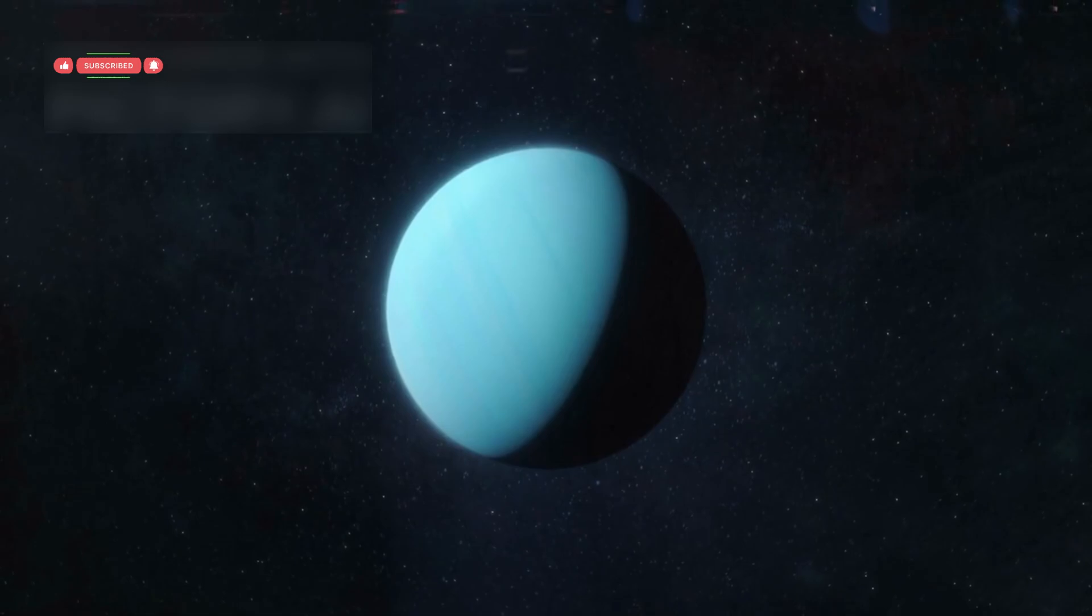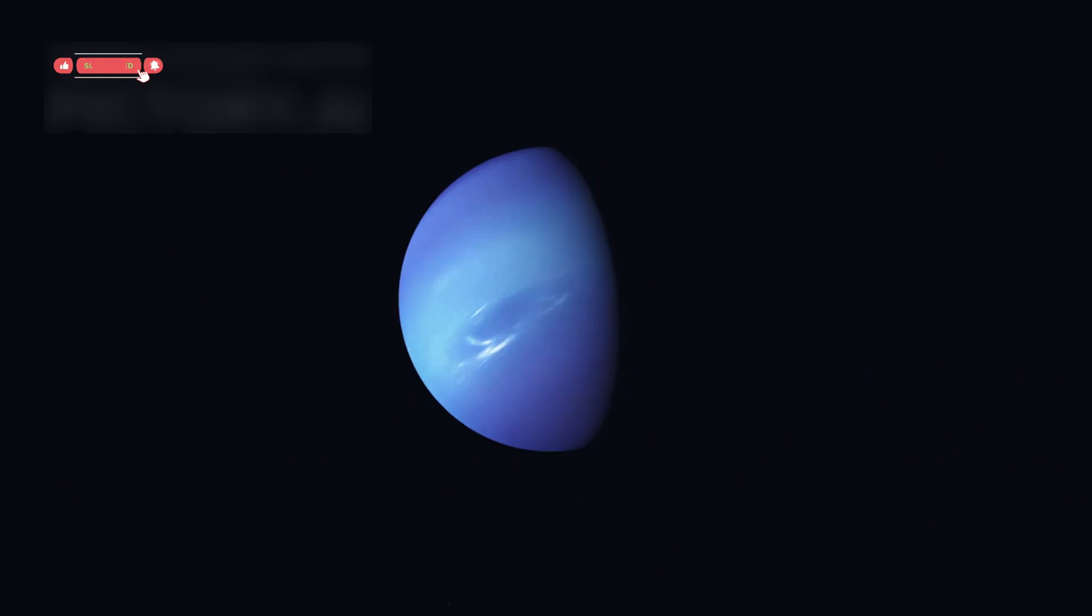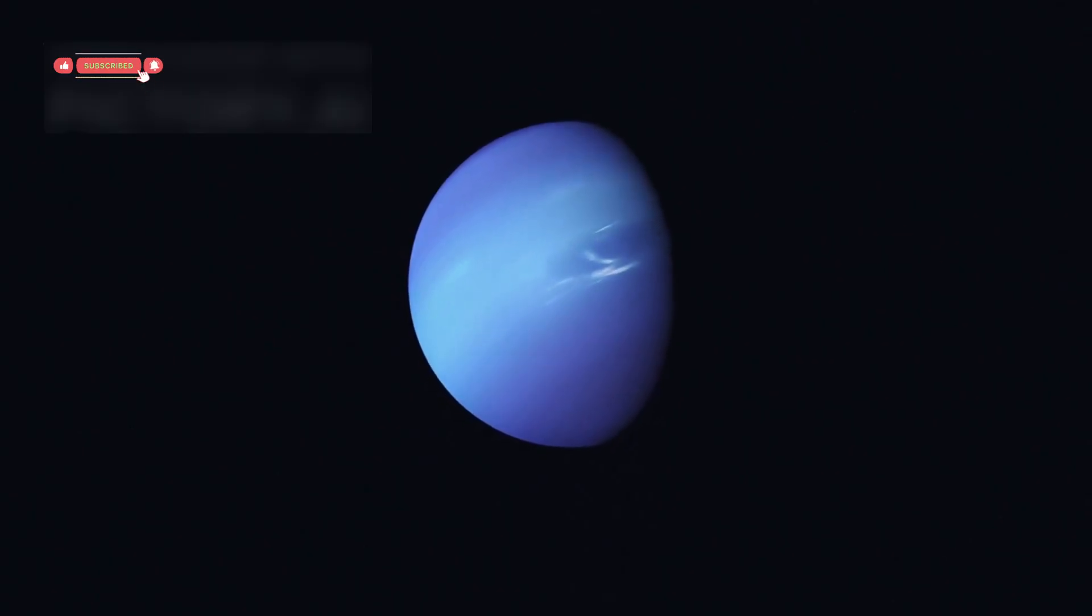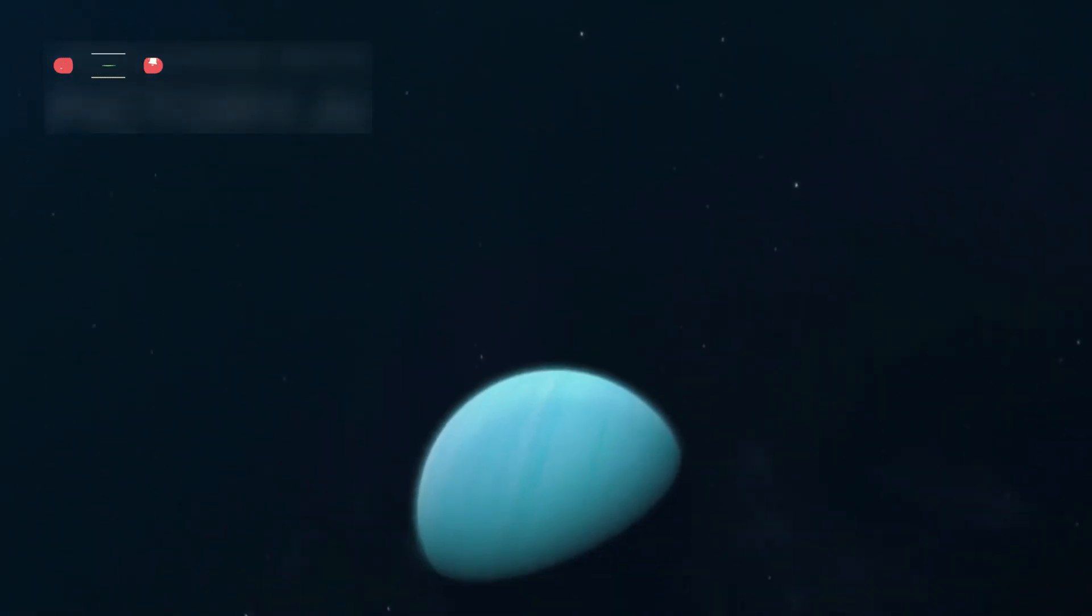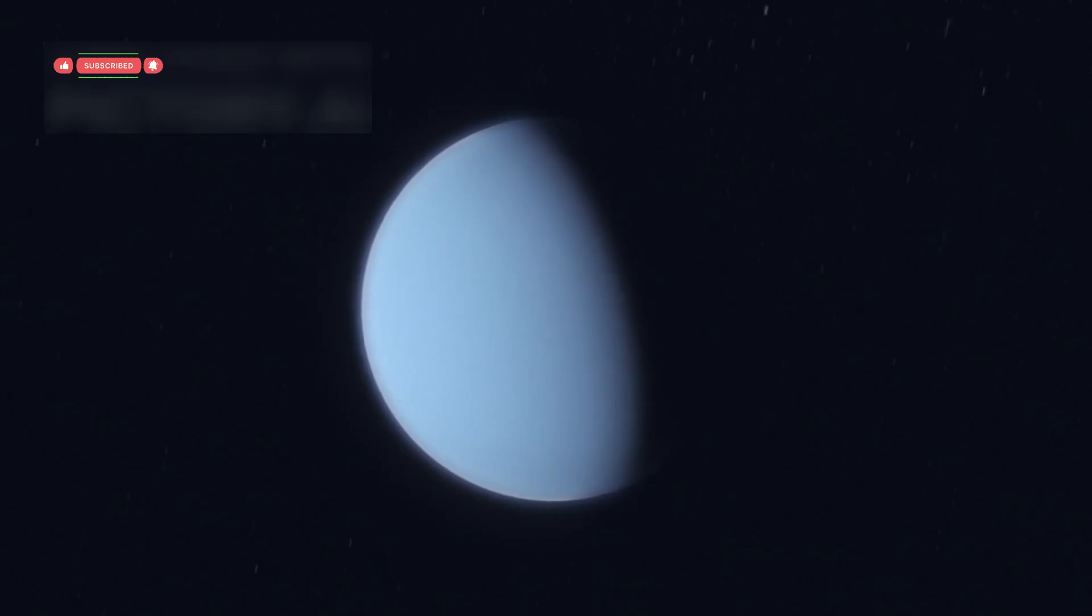Voyager 2 then went even further. It became the first and only spacecraft to fly by Uranus in 1986 and Neptune in 1989. At Uranus, it discovered ten new moons and a set of faint rings, and it found that Uranus spins on its side. The probe also studied Uranus's tilted magnetic field and atmosphere.